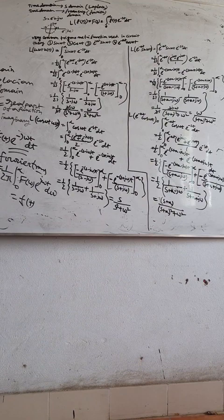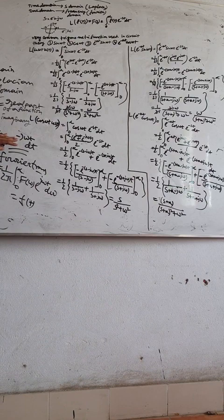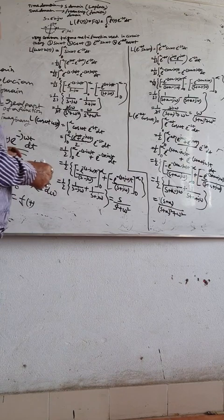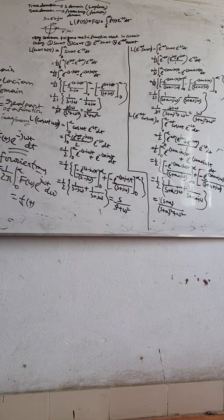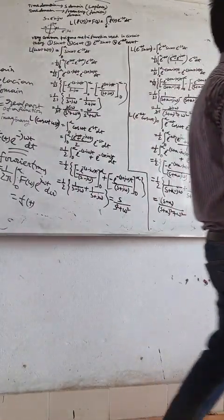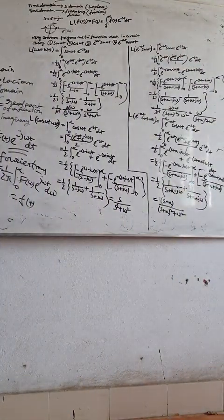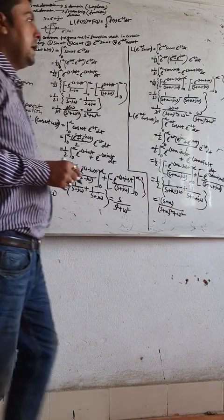If you want to convert time domain to Laplacian domain — that is s-domain — note that in Fourier transform the signal is confined to only the imaginary axis (we take only j omega, the imaginary part). But in Laplace domain, we consider both the imaginary and the real part of the signal. In circuit theory we apply Laplace transform, so we don't need to bother about Fourier transform.